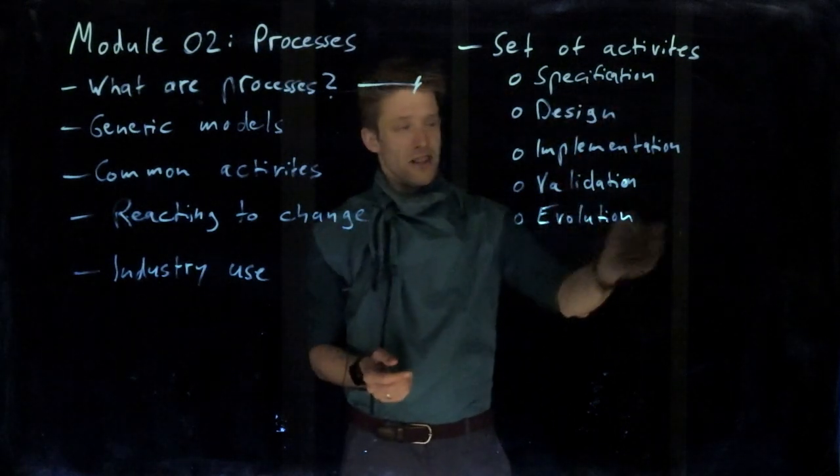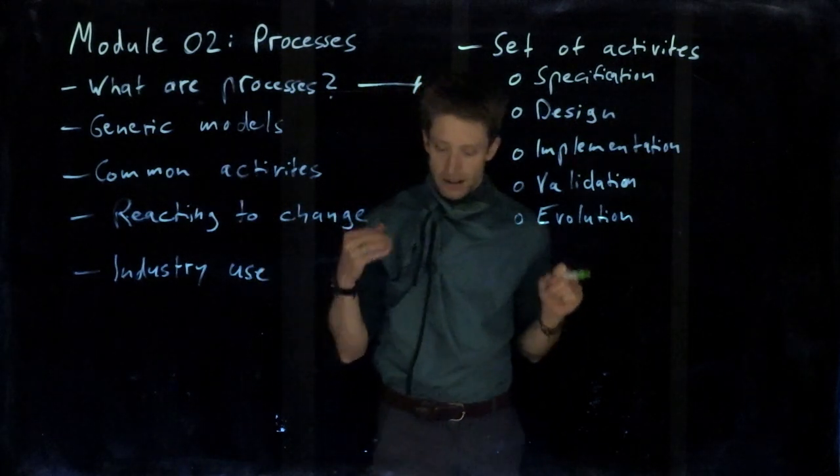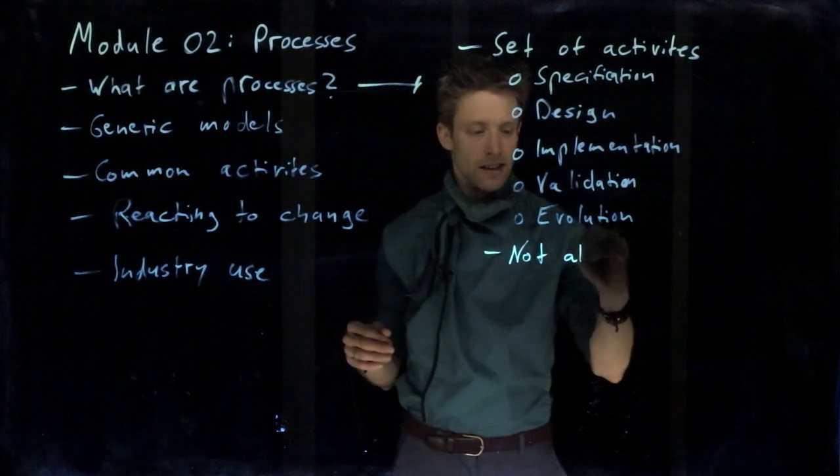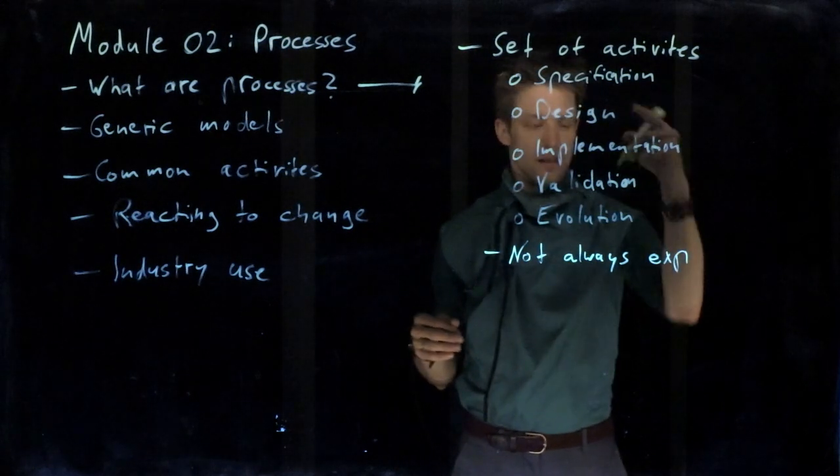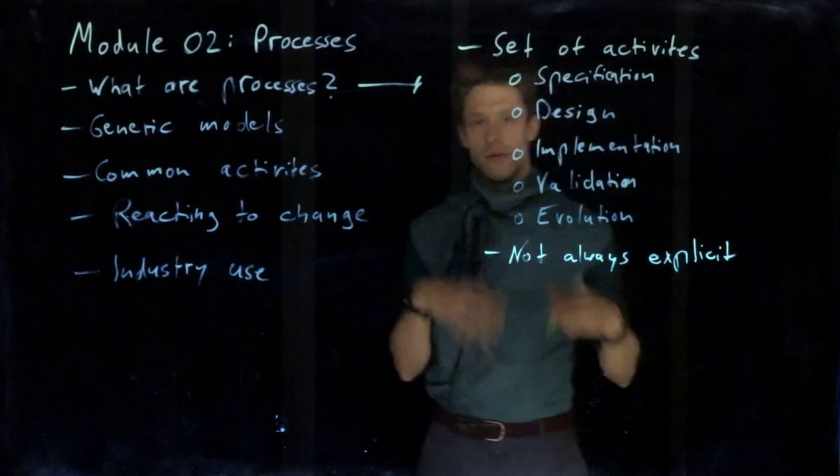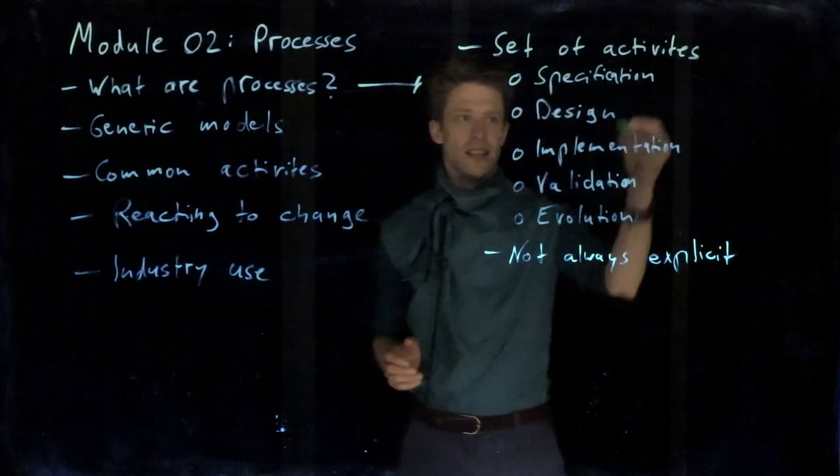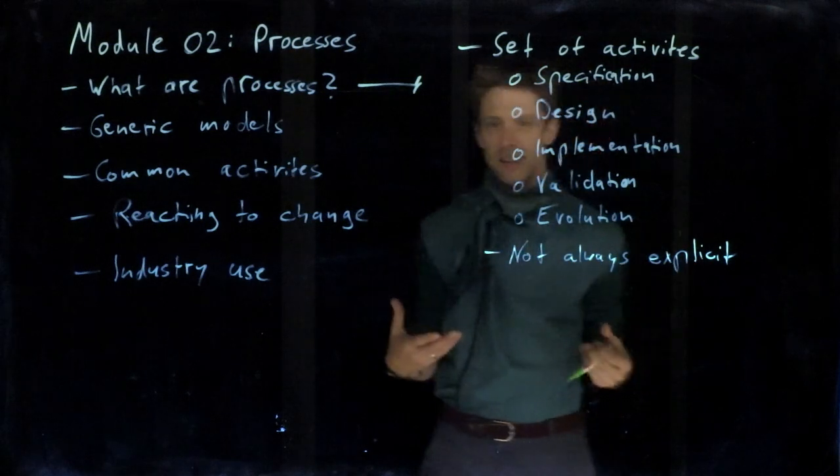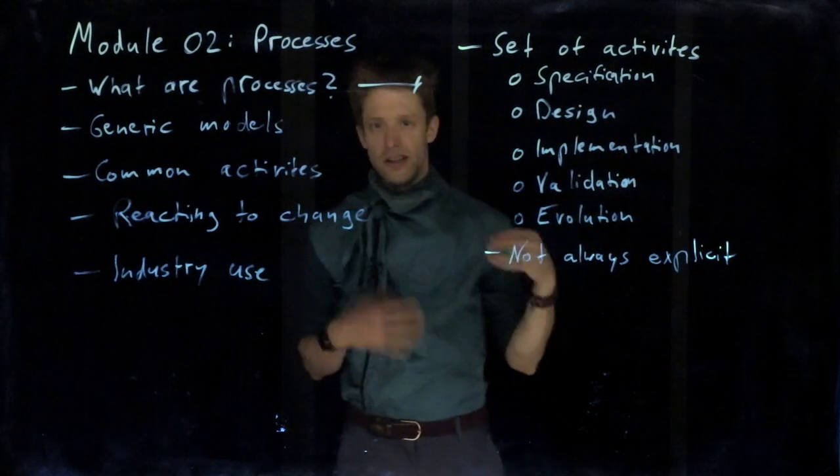And these activities are very typical things that you will find in a lot of different processes. But it's important to remember that these might not always be explicit. So it might not always be that someone says now we do design, for example, but it could be something that just happens accidentally. While you think about how to implement your code, you make some design decisions. And it could be that you don't write down your requirements, but nevertheless you will try to understand what is necessary in order to satisfy the customer, the stakeholder needs.